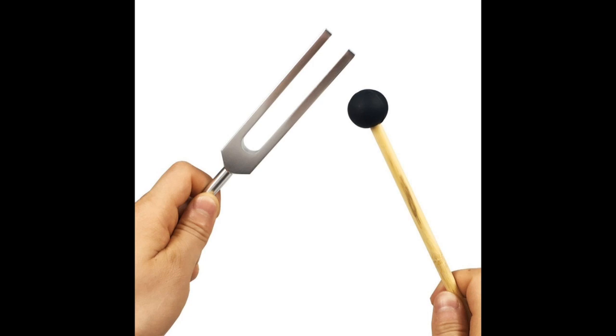You are seeing the picture. One is a tuning fork, another one is a rubber hammer. The rubber hammer changes from one place to another place. It is like a stick with rubber at the end.